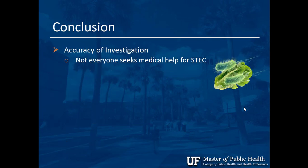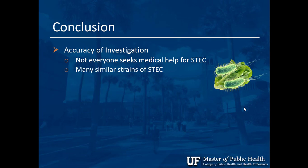For the conclusion: what was the accuracy of this three-month investigation? Not everybody seeks medical attention — in 2015, only 6,000 out of a possible quarter million were confirmed because this is treated symptomatically. Also, are everyone's stories reliable? And with over 50 similar strains of Shiga Toxin E. coli, are we tracing the right one?